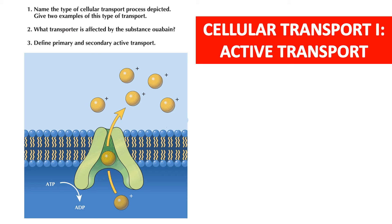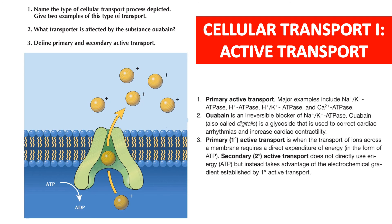Cellular transport — active transport: name the two cellular transport processes depicted and give two examples. Primary active transport: major examples include the sodium-potassium pump (Na⁺/K⁺-ATPase), hydrogen ATPase, hydrogen-potassium ATPase, and calcium ATPase. Ouabain is an irreversible blocker of sodium-potassium ATPase. Ouabain, also called digitalis, is a glycoside used to correct cardiac arrhythmias and increase cardiac contractility.